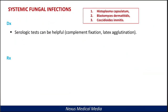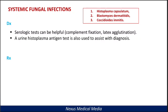Serologic tests can be helpful, including complement fixation and latex agglutination. A urine histoplasma antigen test is also used to assist with diagnosis for histoplasmosis.